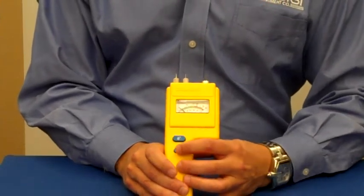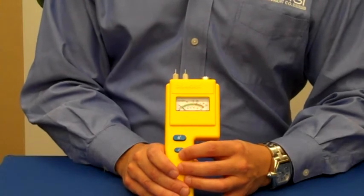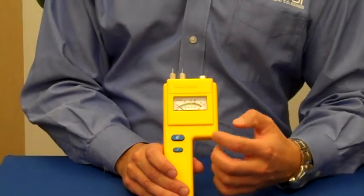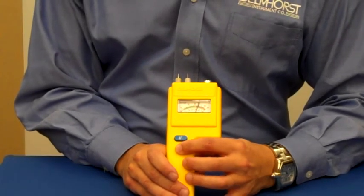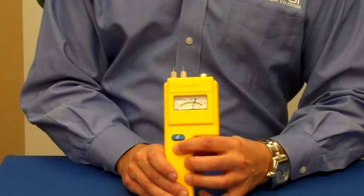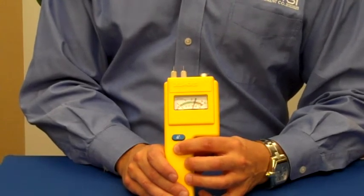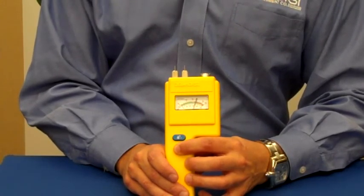The BD10 also offers a built-in calibration check so that you can verify that the meter is electrically in calibration. By pressing the check button on the face of the meter, the needle should read 20 on the wood scale, indicating that the moisture meter is in calibration.